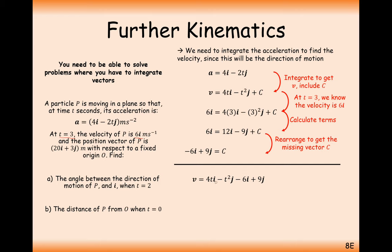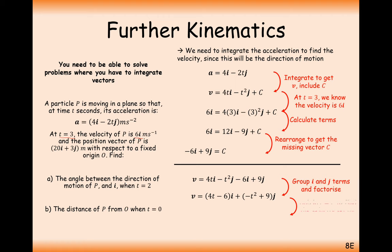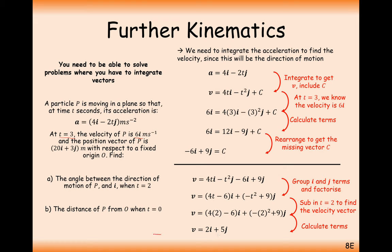Writing out the final velocity expression, grouping i and j components together, then plugging in t equals 2 to find the angle of motion. At t equals 2, the velocity is 2i plus 5j. This vector travels 2 to the right and 5 upwards. We want the angle between this direction vector and the horizontal i component.